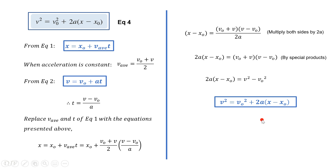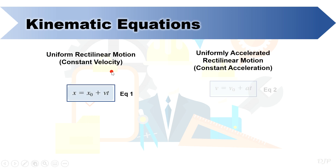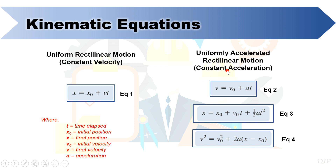The same applies as with the third kinematic equation: when the acceleration is varying, equation 4 is not applicable. Now that you have an idea of how these kinematic equations are derived, you will soon memorize them by frequently applying them in problem solving. All four kinematic equations are only applicable when the acceleration is constant. For sample problems, kindly refer to the next part of this lecture.